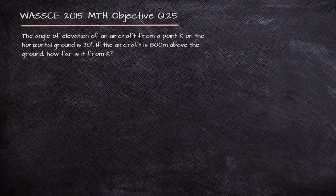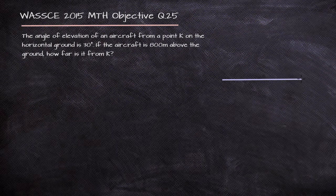Here we are talking about an aircraft. The angle of elevation of an aircraft from a point K on the ground is 30 degrees. If the aircraft is 800 meters above the ground, how far is it from K? Let's depict this word problem and see what we can come up with.